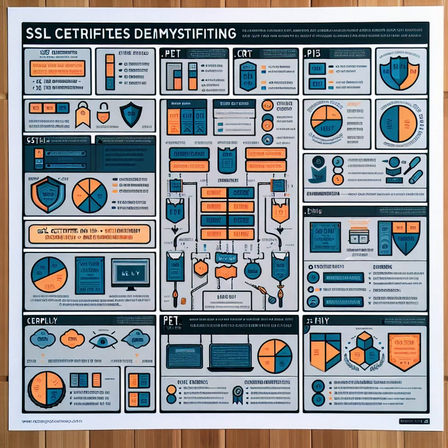Lastly, we have key files, which are often referred to as private key files. These files contain the private key component of an SSL certificate and are crucial for establishing secure encrypted connections. While key files are not standardized, they usually come in PEM format and can be password protected for added security.